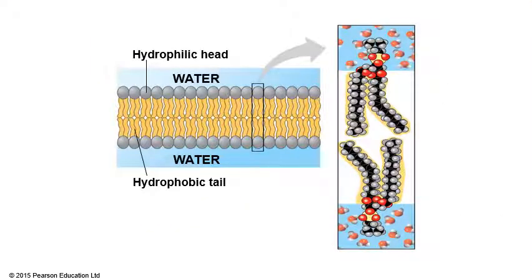As discussed already, phospholipid molecules inside water voluntarily form a phospholipid bilayer. Because of the hydrophilic head side, they like to get in touch with water. And the hydrophobic tail side doesn't like water. That's why those hydrophobic tail sides group together, making a phospholipid bilayer.